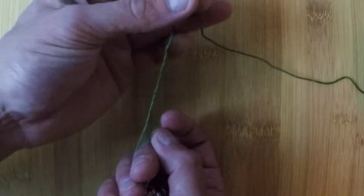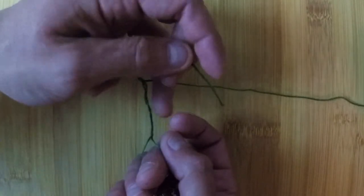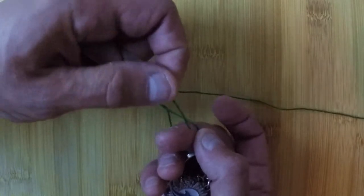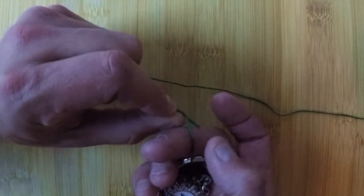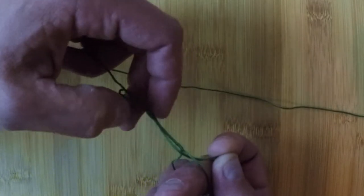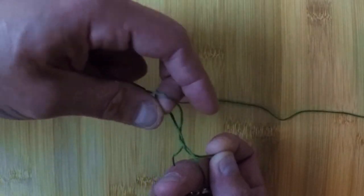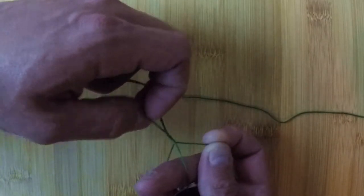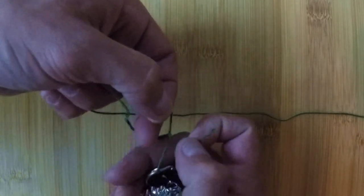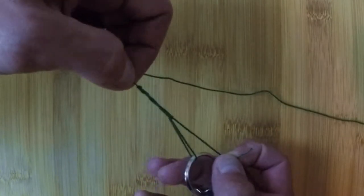I'm going to come through that loop in my middle finger and a lot of guys will finish the knot there and just pull it tight and that will be a pretty strong knot. But what I like to do is come back through the loop that I had just made and then cinch it down.